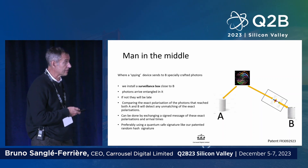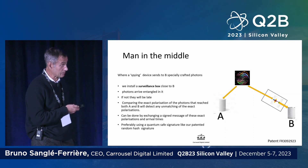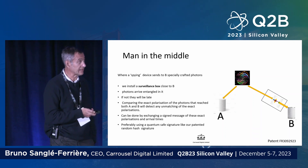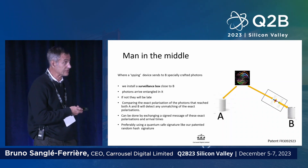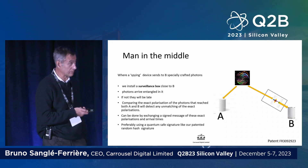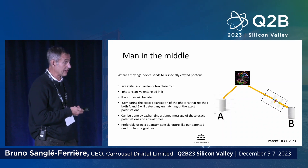If the photon is not entangled with A, it will arrive late. By checking the time of arrival in B, we know whether the photon arrived entangled or not.